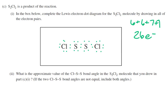Counting the electrons I've drawn: 2, 4, 6, 8, 10, 12, 14, 16, 18, 20, 22, 24, 26 — I've drawn 26 electrons, so this is the correct structure. Everybody has a single bond, and I just earned one point for drawing that correctly.